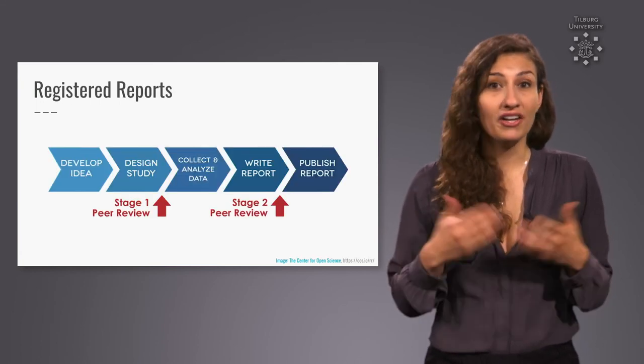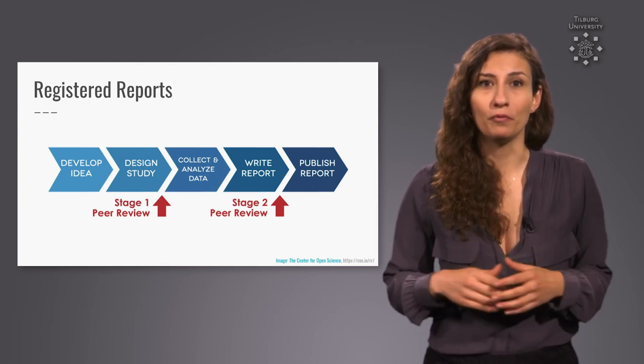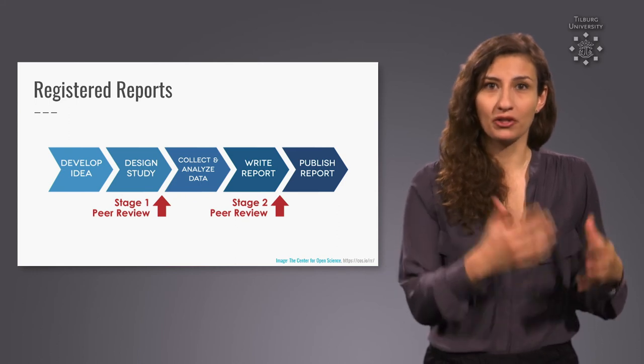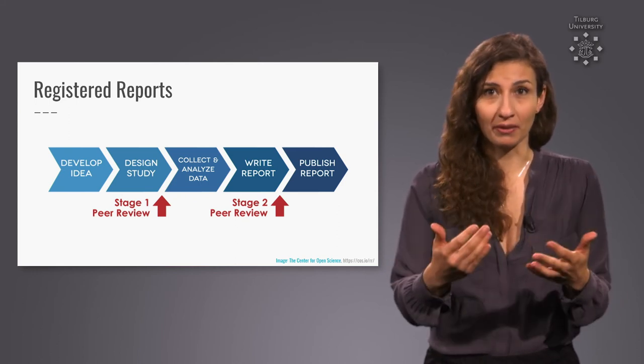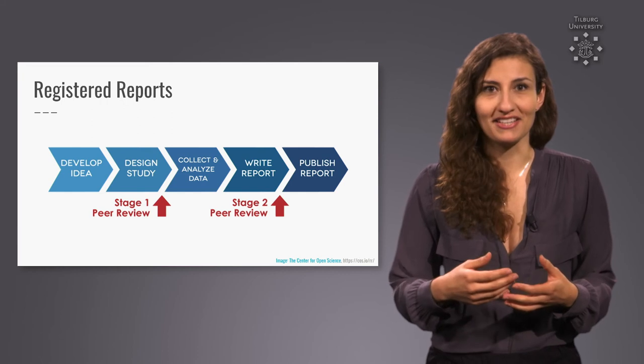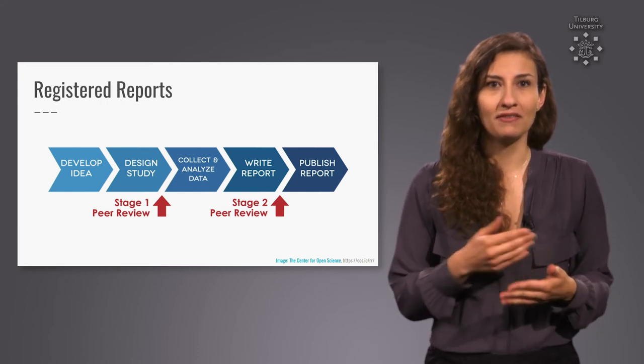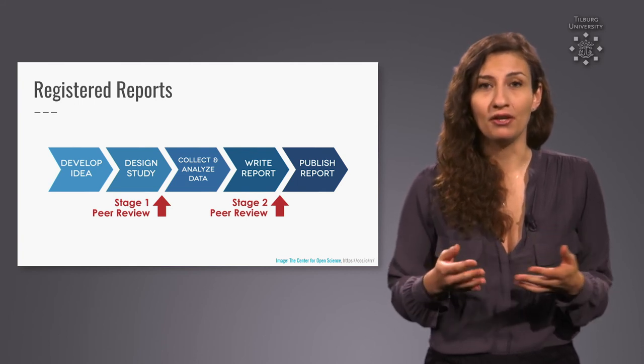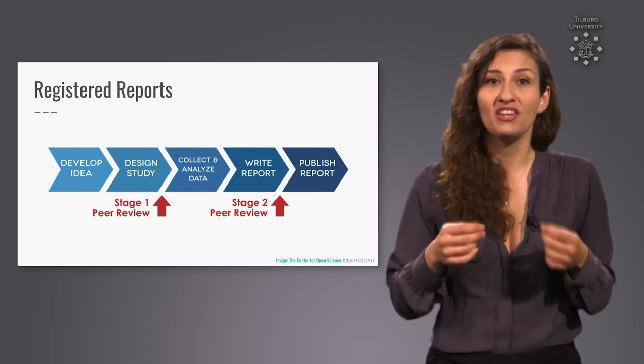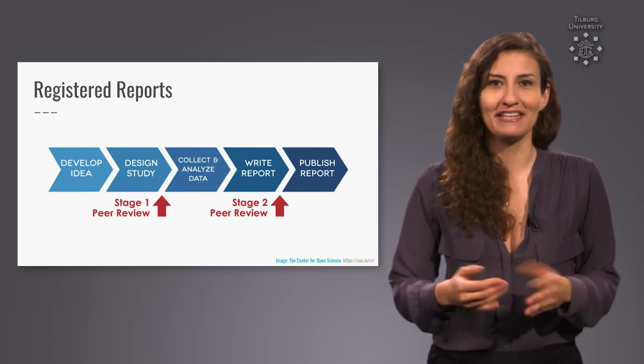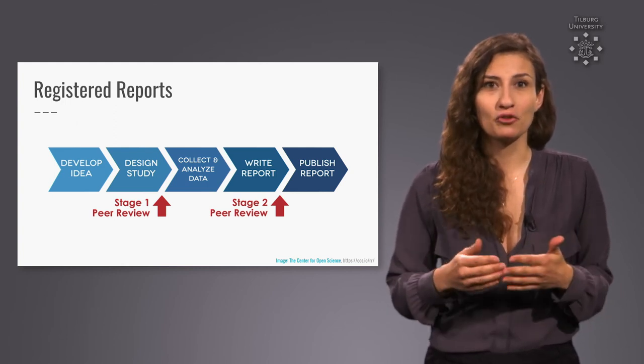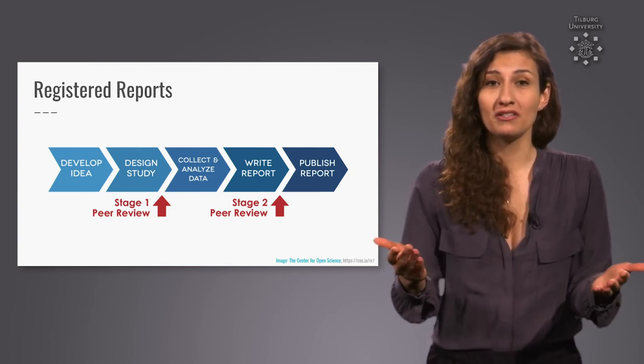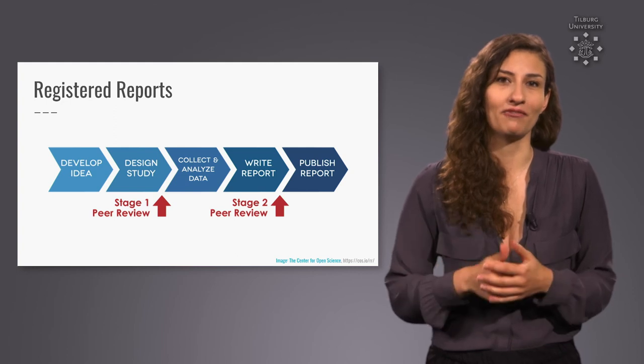Registered reports are another contribution by the reform movement. Registered reports are a publication format where a scientific journal agrees to publish your experiment before you've collected the data based on evaluating the methods and theoretical basis alone. That means that publication for these types of articles is not contingent on how exciting the results of the study are. This helps us ensure that the body of evidence that enters public knowledge is less distorted by the tendency to publish only exciting results.